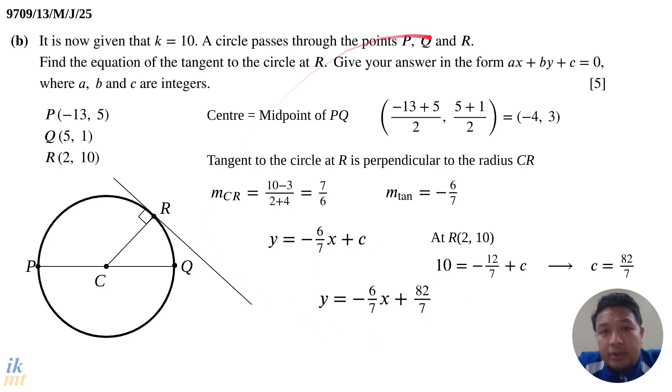Now go back to the question and see, is that the form that they want. Here it does say it gives your answer in the form ax + by + c = 0. So there's one more step you have to do, and that is to rearrange and make it, and rewrite this in the form ax + by + c = 0 where a, b and c are integers. If you do that, you'll get 6x + 7y - 82 = 0. And that is the solution for this question, question B.